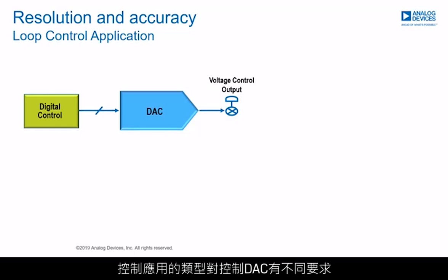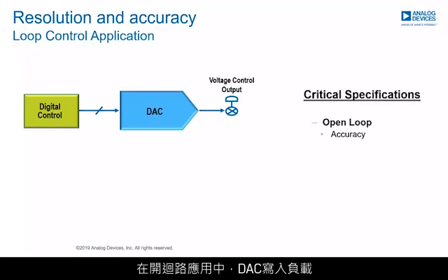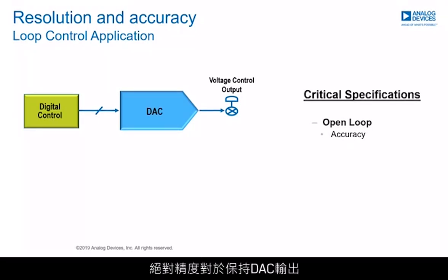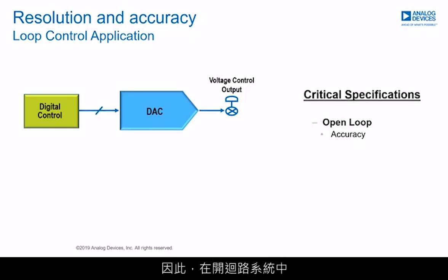The type of control application places different requirements on the controlling DAC. In an open-loop application, the DAC drives a load such as a valve or actuator. Due to the lack of feedback, absolute accuracy is critical in keeping the DAC output as close as possible to the ideal DAC transfer function. Therefore, selecting a truly accurate DAC is more important in an open-loop system.